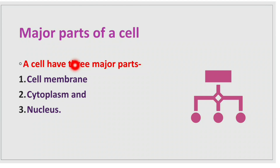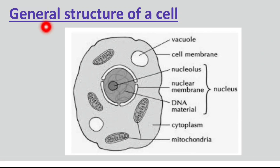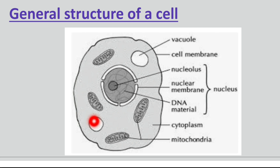If we see the structure of a cell, we will find three major parts: cell membrane, cytoplasm, and the nucleus. With the help of a diagram, we can explain these three major parts. The first is cell membrane — this is the outer border. This part separates the interior of the cell from the outside environment.